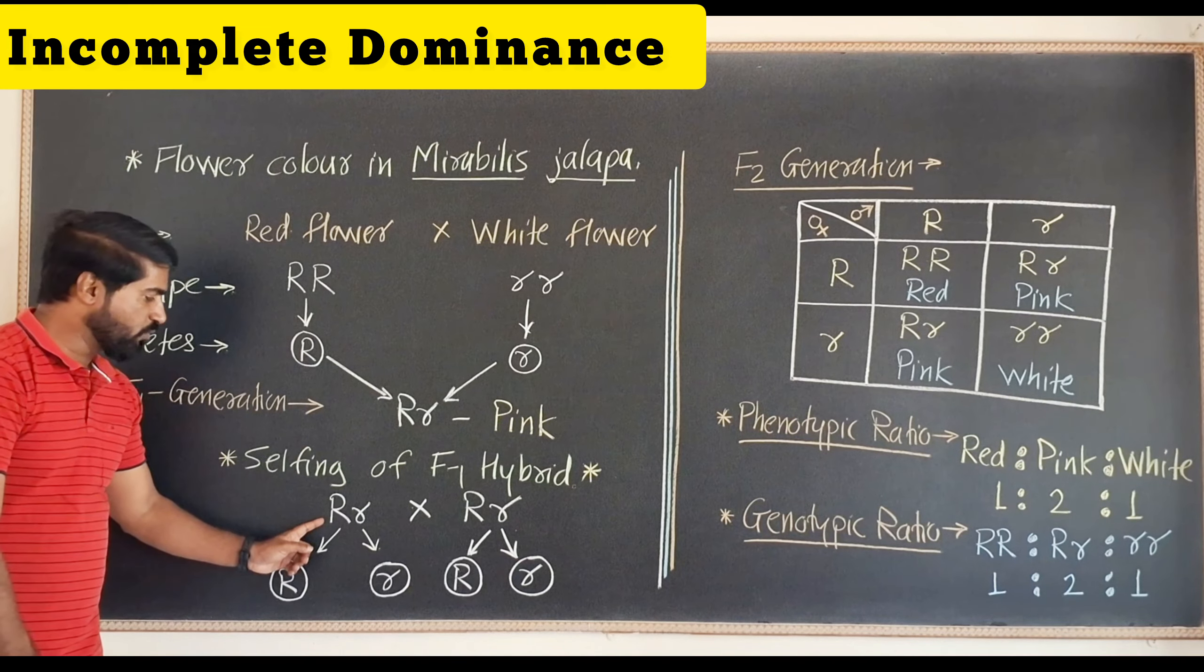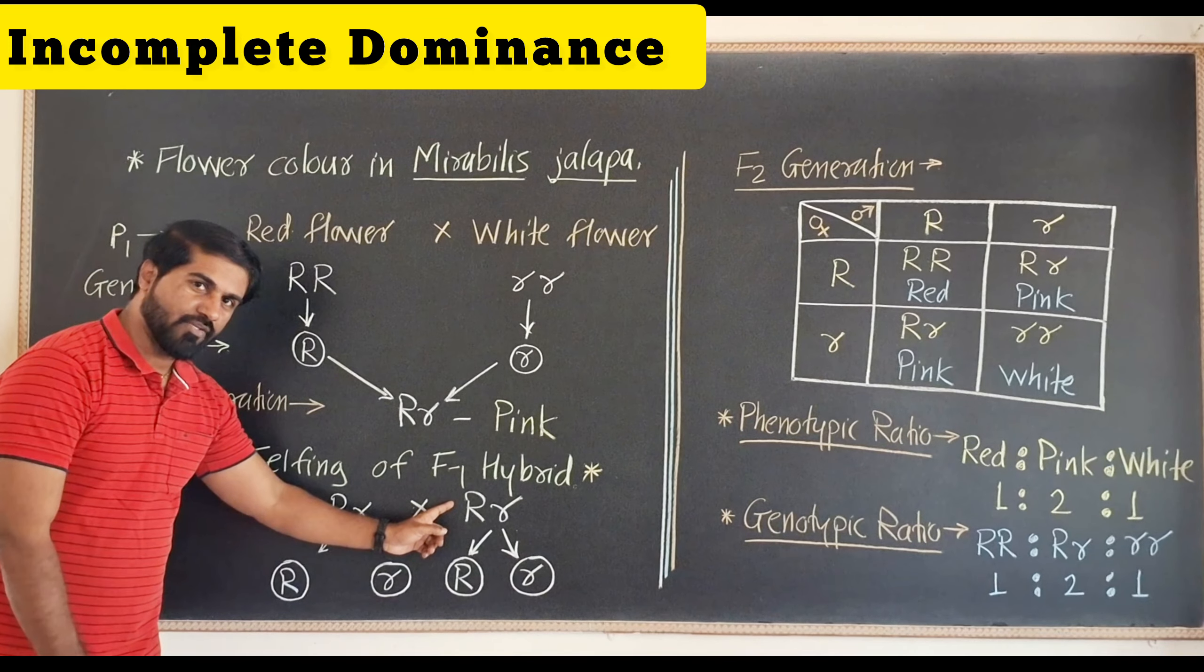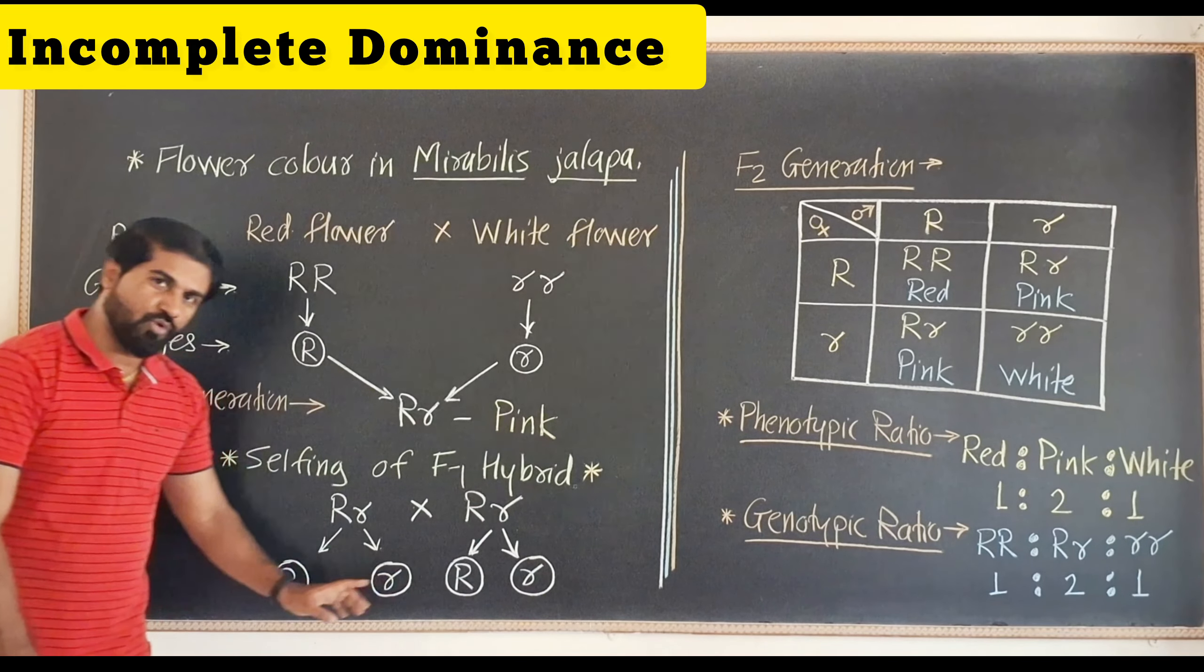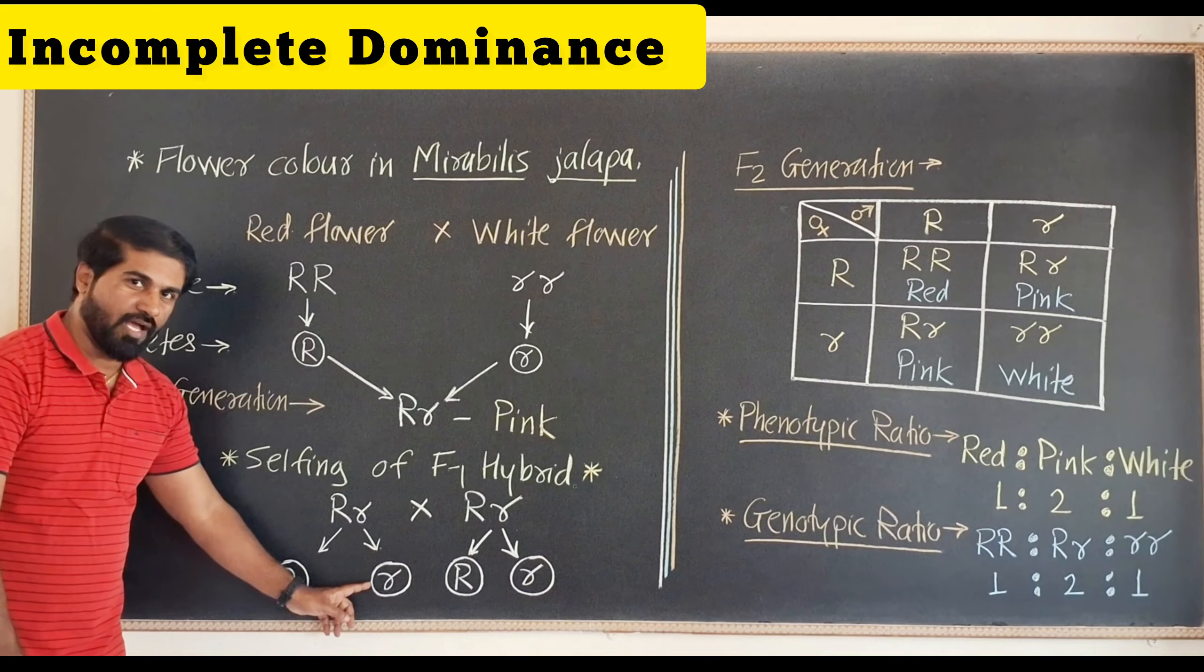Therefore we have to cross capital R small r with capital R small r. Both will show gametes like capital R and small r.